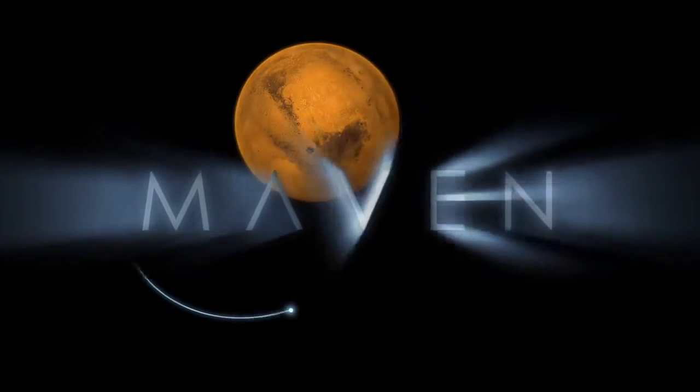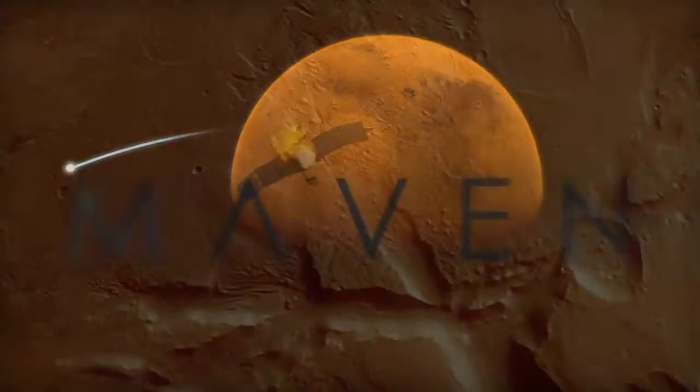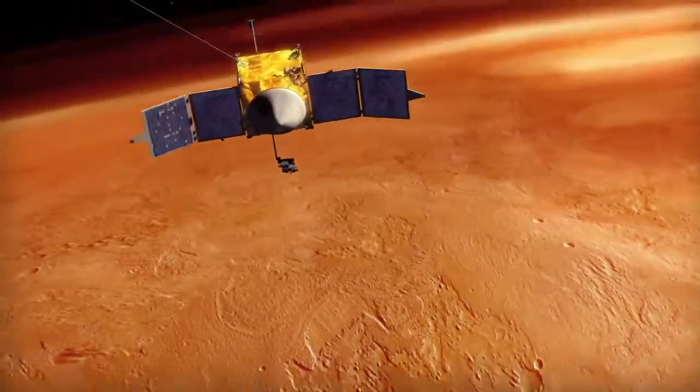MAVEN is our next mission to Mars. It's an orbiter. It's designed to help us understand what happened to the Martian climate over time, how the climate has evolved over the lifetime of the solar system.